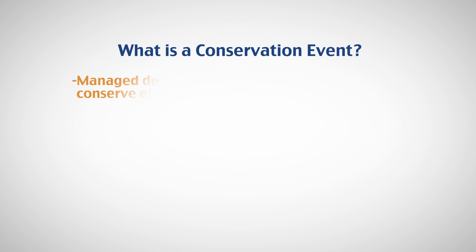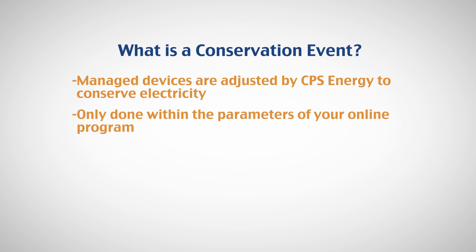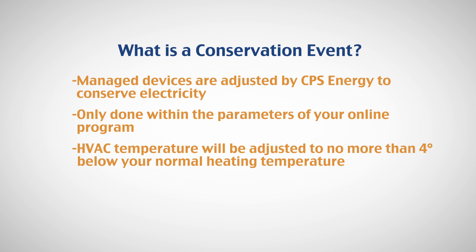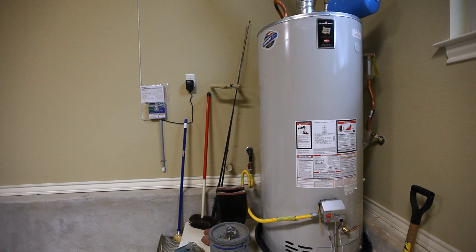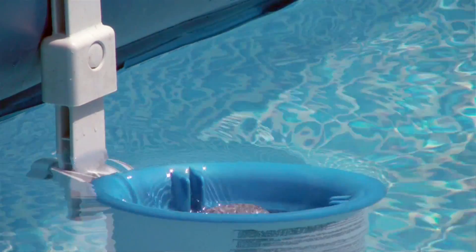Let's talk about that now. When you sign up for the Home Manager Program, you help CPS Energy to curtail power usage during periods of excessive demand, known as a conservation event. Using state-of-the-art software and Verizon Wireless technology, a signal is sent to your home manager to save small amounts of energy at a particular time. The energy saved helps to keep our Texas state grid and our community from experiencing possible rolling blackouts. During a conservation event, your managed devices are adjusted by CPS Energy to conserve electricity, within the parameters of your online program, and should not significantly affect your comfort. Your HVAC system's temperature will be adjusted to no more than 4 degrees below normal heating temperature and no more than 4 degrees above your normal cooling temperature at the time the conservation event starts. Your other managed devices — the water heater and the pool pump — will be cycled off during the conservation event.